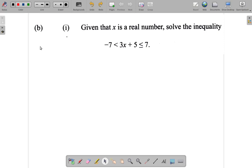No. Let's see what's happening here. Negative 7 is less than 3x plus 5. You have three sides within this inequality.